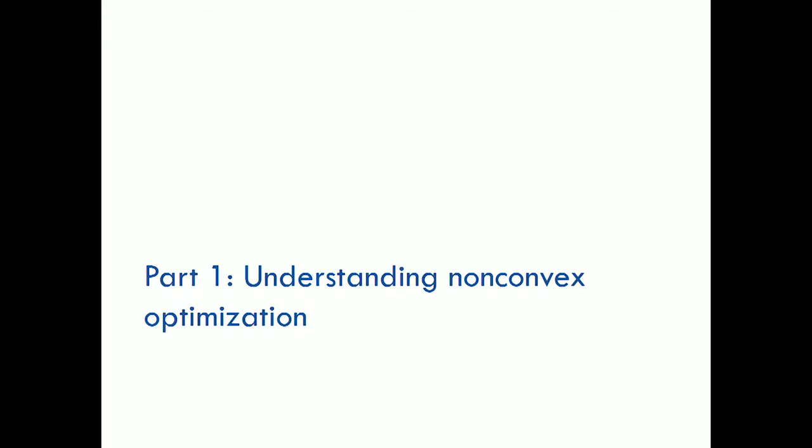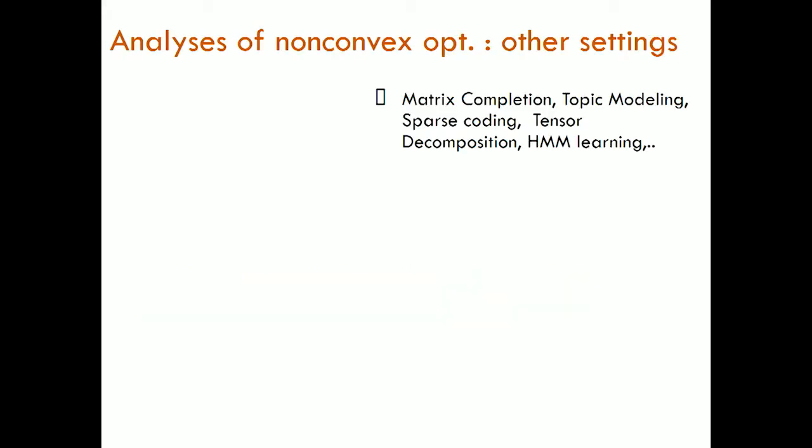Understanding non-convex optimization. There are actually lots of papers in the literature, obviously motivated by deep learning but not about deep learning, where people analyze non-convex optimization for quite a few interesting machine learning problems: matrix completion, topic modeling, sparse coding, tensor decomposition, HMM learning, and many other problems.